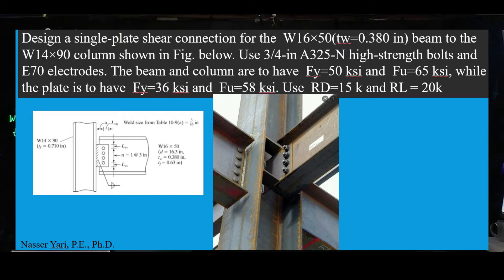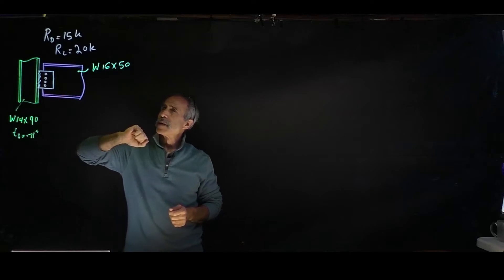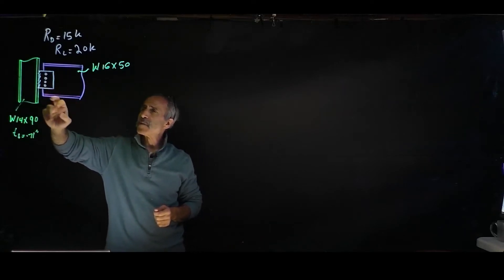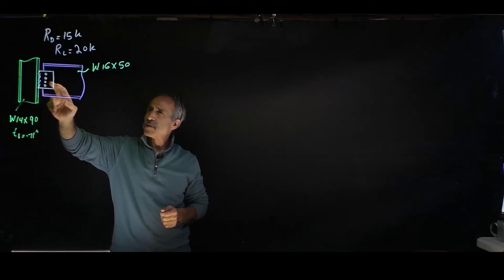Both steel are Fy=50 ksi, but the plate that we're going to use for connection is welded to the column and bolted to the beam. We're going to analyze the bolted connection here.